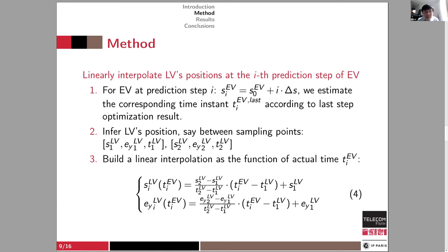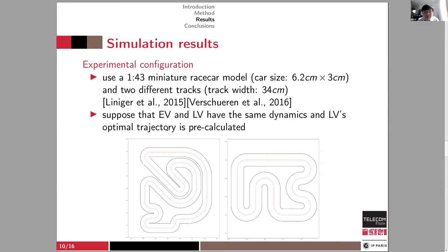To interpolate the leading vehicle's position, we first estimate the corresponding time at each step in the prediction horizon from the last step's calculation result, then infer the leading vehicle's position between sampling points using simple linear interpolation. We perform simulations on two different tracks using a 1:43 miniature race car model, assuming both cars have the same dynamics. The leading vehicle's optimal trajectory is pre-calculated for simplicity, though in theory it can be estimated online. We use the ACADO code generation 2 to generate the SQP framework and a wrapper to call the MIQP solver in Google OR-Tools.